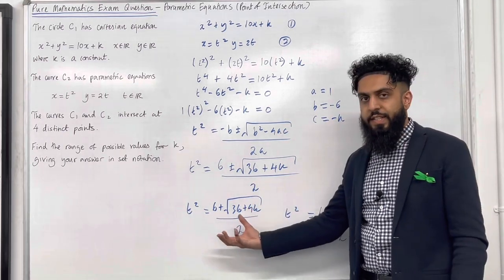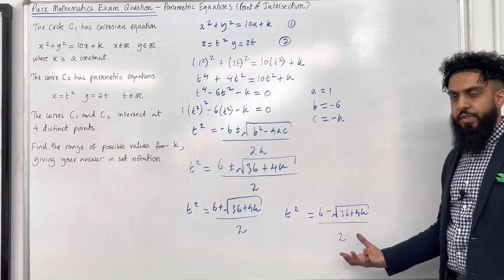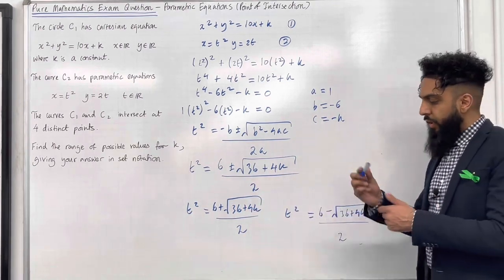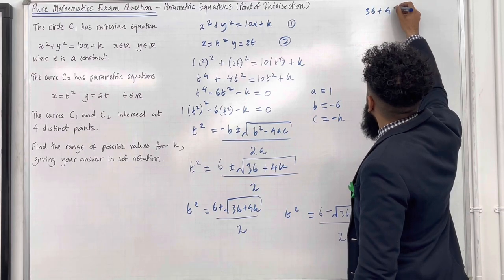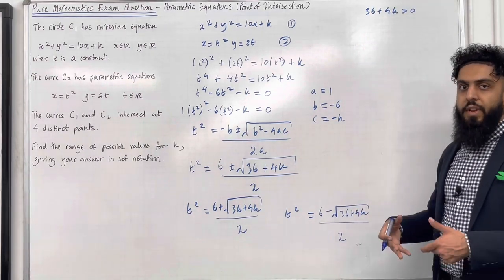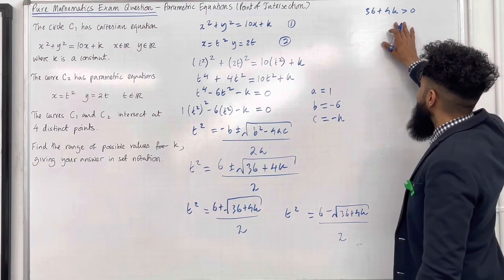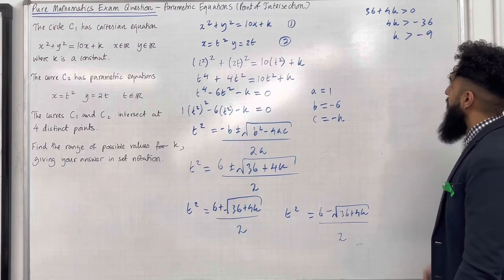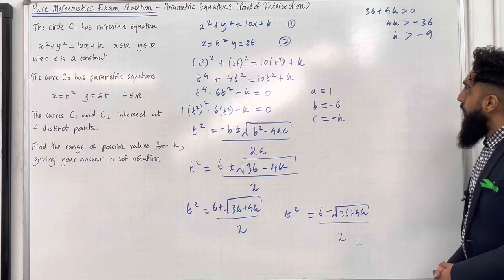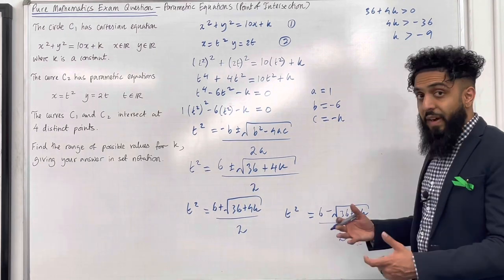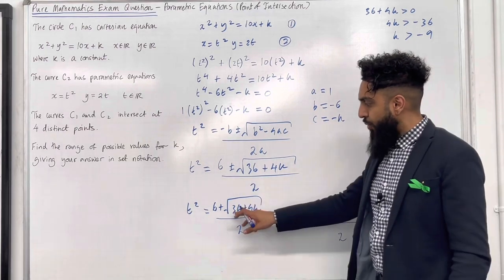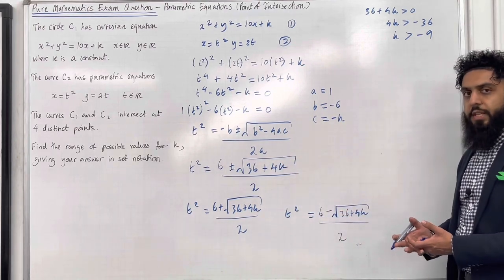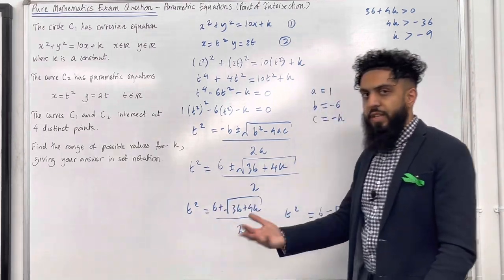For each expression to have two distinct roots, the discriminant — the expression inside the square root — must be greater than 0. So 36 plus 4k must be greater than 0. We can't take the square root of a negative number. Solving this inequality gives 4k greater than minus 36, hence k is greater than minus 9. Provided 36 plus 4k is greater than 0, the first expression (6 plus the square root, over 2) will be greater than 0, so that equation gives two distinct roots.